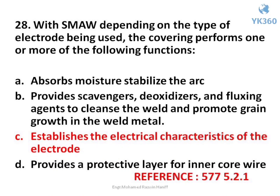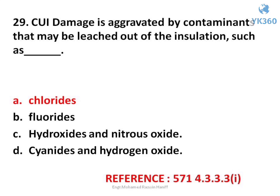Question number 29. CUI damage is aggravated by contaminants that may be leached out of the insulation, such as — options are: A. Chlorides, B. Fluorides, C. Hydroxides and nitrous oxide, D. Cyanides and hydrogen oxide. Answer is option A. Chlorides.